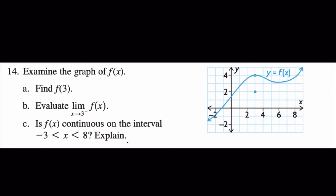We have another example with a graph where we need to find a couple of things. First, find f(3). Coming to x = 3 on the graph, there are actually two points — one open and one defined — so f(3) equals 2. Next, evaluate the limit as x approaches 3 from the left. Following the curve from the left, it approaches the open point, giving a limit equal to 4.